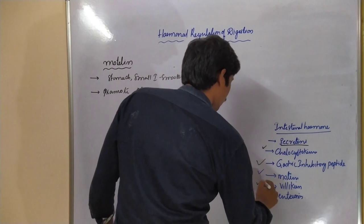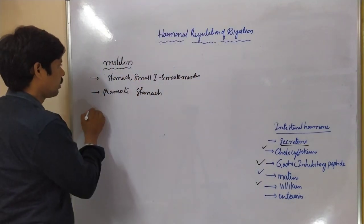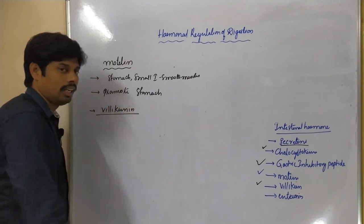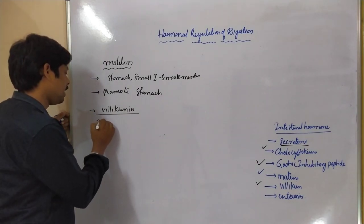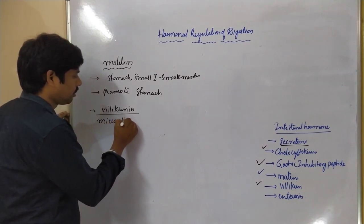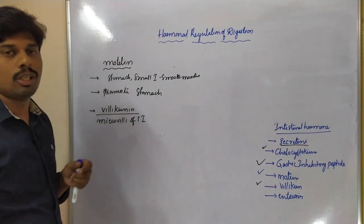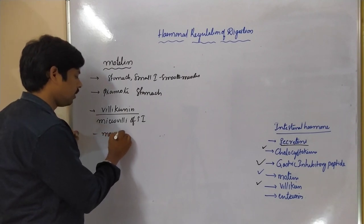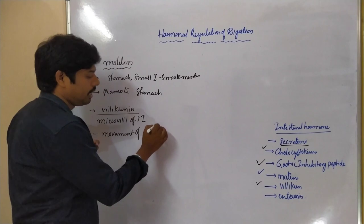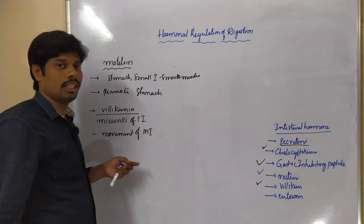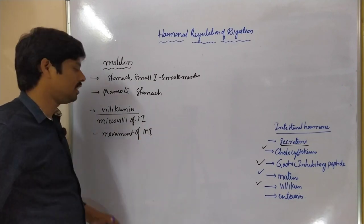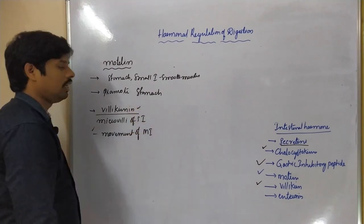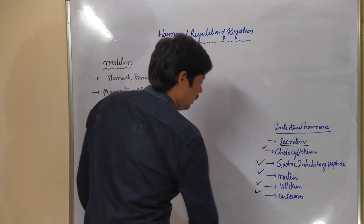Coming to villikinin. Villikinin is a hormone secreted by the microvilli of the small intestine. It is essential for the movement of the microvilli, and this movement increases the absorption capacity of the microvilli.